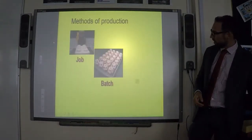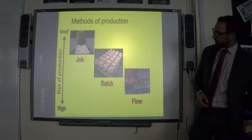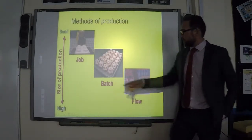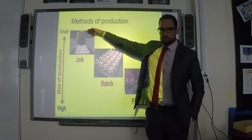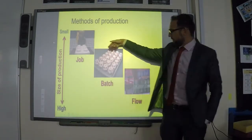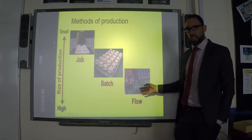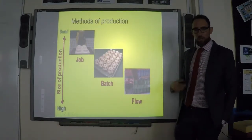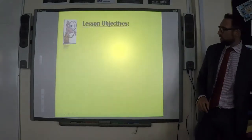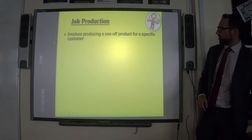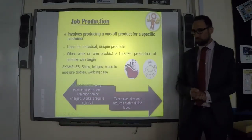The first one we're going to look at is job production. In terms of the size of production: job production is quite small, batch production is in the middle, and flow production involves a very large, continuous production of loads and loads of products.